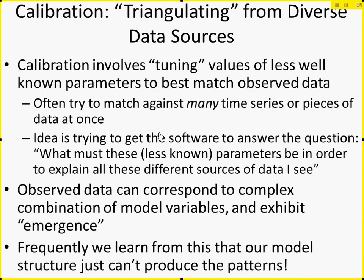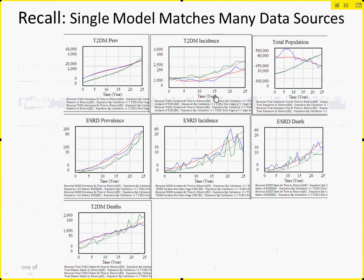The process of calibration involves triangulating from diverse data sources, but it's not analytic triangulation — we're using the model. Specifically, we're adjusting values of less well-known model parameters to best match observed data. This data may be qualitative or quantitative; it may be spatial patterns or patterns over time. Typically here we're trying to match against many time series at the same time, taking one model and holding it to account to many particular pieces of data, asking: what must these less well-known parameters be in order to explain all these different data sources?